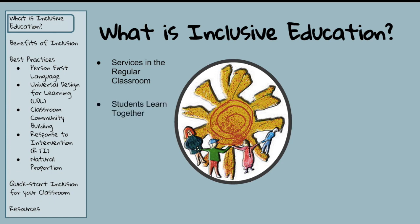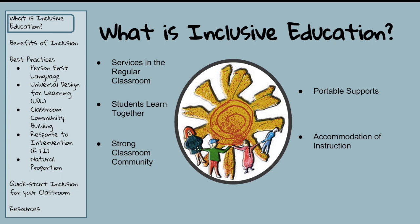It changes the classroom to build a community where everyone has equal opportunities to participate and express themselves. In an inclusive classroom, supports are portable and pullout services are replaced by bringing the services into the regular classroom. Universal Design for Learning is implemented to accommodate the instructional needs for all students.